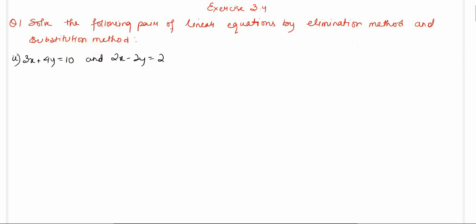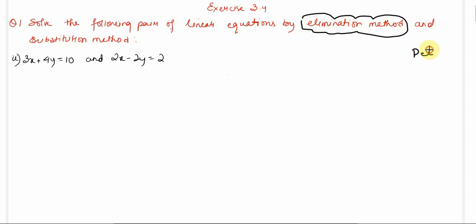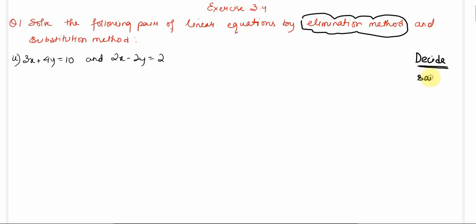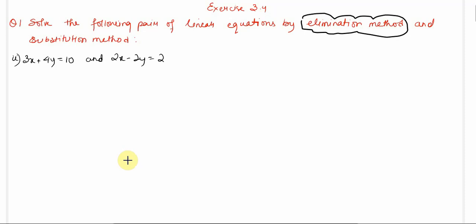Let's revise the steps from the introduction. In order to use the elimination method, first we need to decide which variable we want to eliminate. After deciding, we need to make the coefficient of that variable the same in both equations. Also, the signs must be opposite — only then can we eliminate a variable.